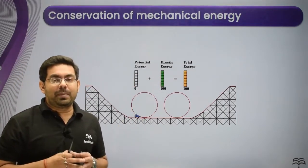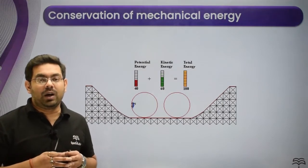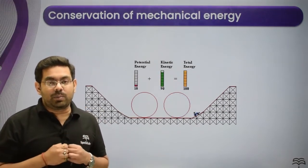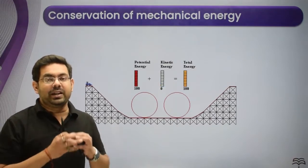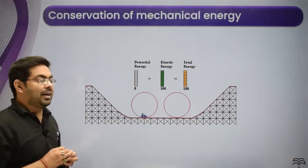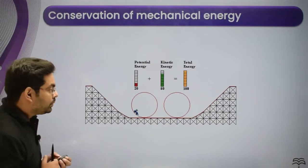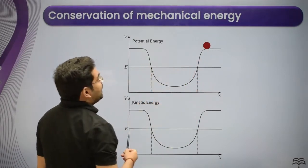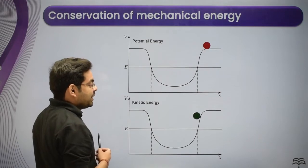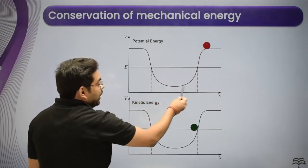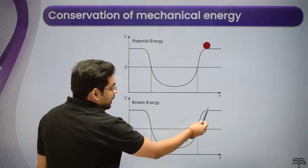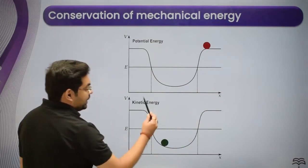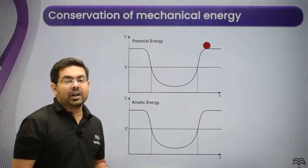So what actually happens: mechanical energy being conserved means total energy remains conserved, but if potential energy is more at some time then kinetic energy will be less, and if kinetic energy is more then potential energy will be less, but their total sum remains constant. When the ball is at the very top of the slope, its potential energy is maximum; as it falls, the potential energy converts into kinetic energy.